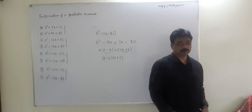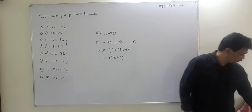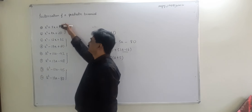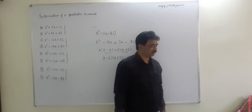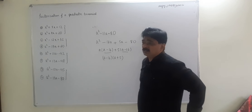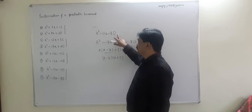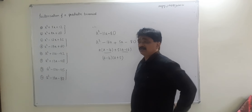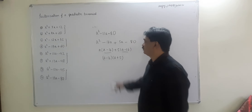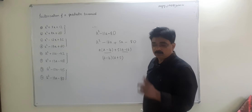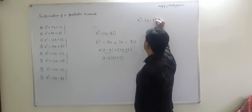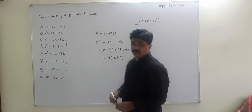You might wonder why we analyze the sign of c. Sometimes you can work it out directly — for a² - 11a - 80, find two numbers whose product is -80 and whose difference is -11, like -16 × 5 = -80. But this technique really shines in harder problems, like x² - 2x - 899.